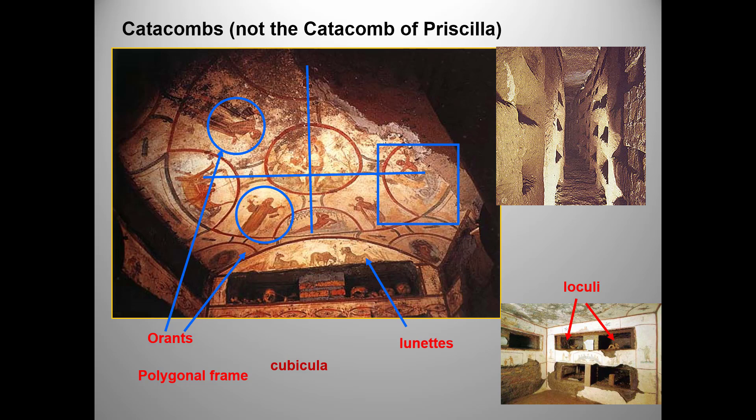Polygonal frame is a term now used in computer graphic design, and it means just what it sounds like — a geometric shape drawn around a painting or design, in this case an oval containing a spoked wheel pattern of paintings. An orant is a figure with both arms raised in prayer. A lunette refers to a semicircular space, often above a door or window, and often decorated with fresco painting or mosaics.